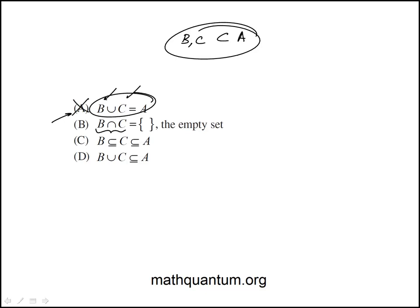This is B intersection C is empty set. That would be only if they were identical. But they could have elements that they don't share, which in that case wouldn't be empty.